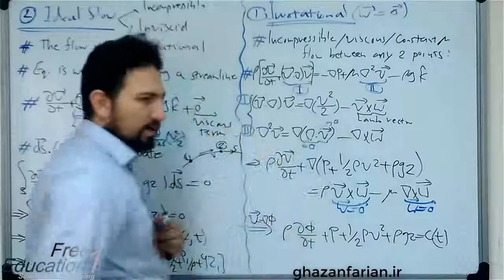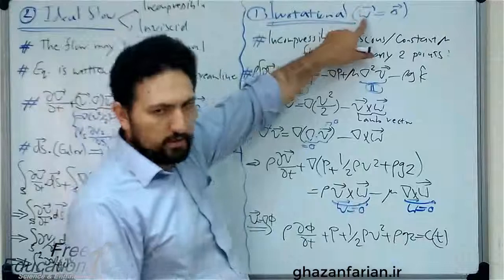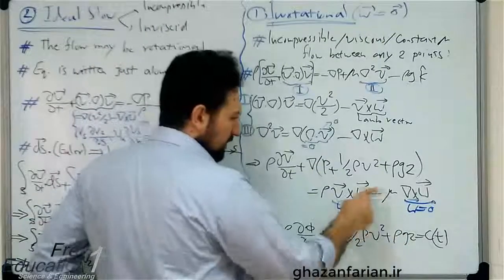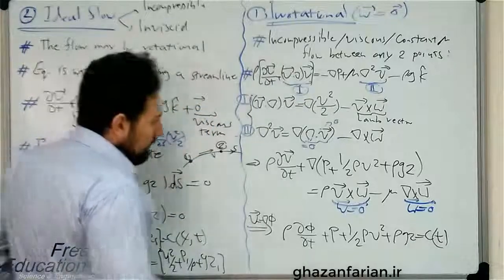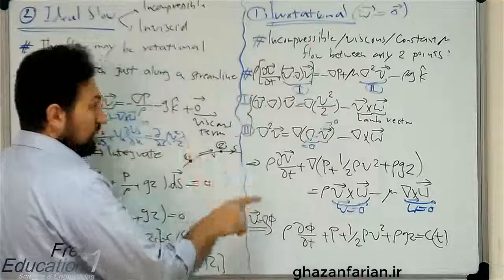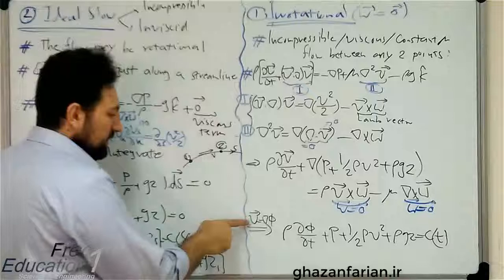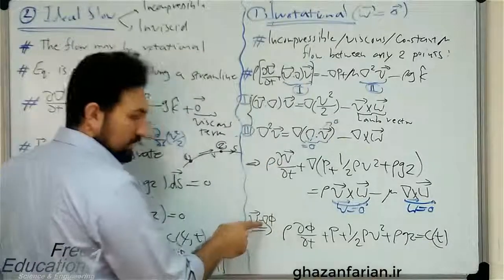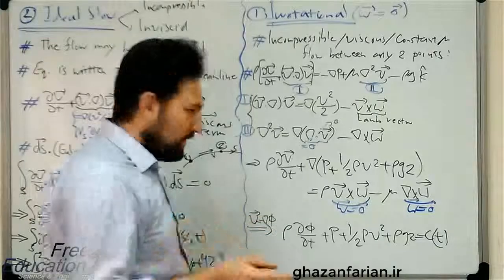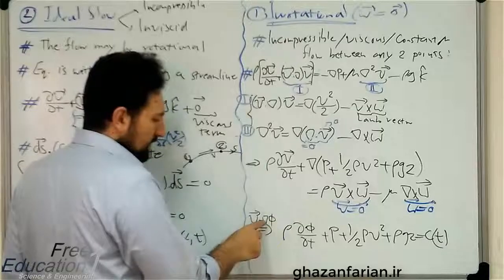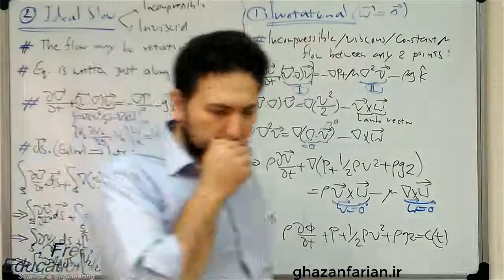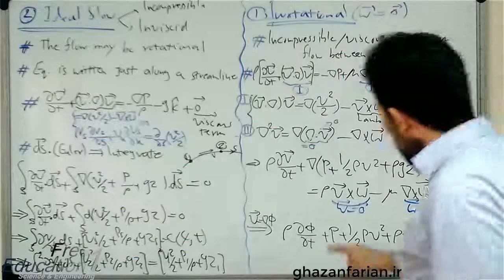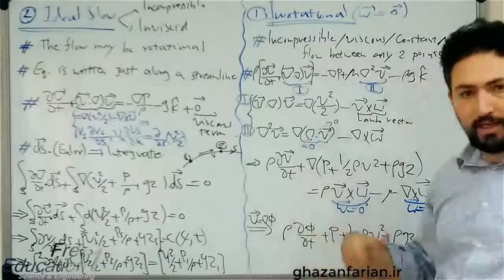Now we impose our main assumption: irrotationality of the flow field, meaning the vorticity vector is zero. Both terms on the right-hand side vanish because both include vorticity. Only the left-hand side remains. In irrotational flows, the velocity vector can be written as the gradient of a scalar potential function φ. Substituting this, the time derivative and gradient operator can be interchanged since the flow field is continuous and the continuum mechanics principle holds.